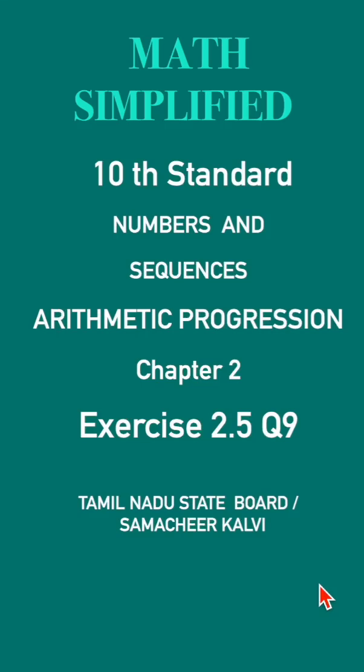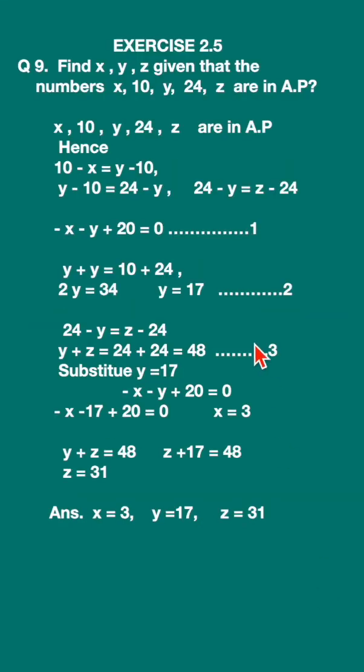Exercise 2.5 question 9: Find x, y, z given that the numbers x, 10, y, 24, z are in AP. So here we know that the common difference between the terms of any AP will be equal.